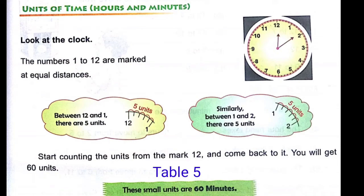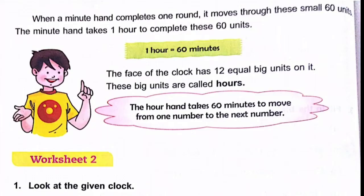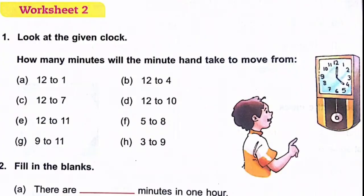One hour is equal to 60 minutes — everyone knows that. Now look at the given clock and read the positions. From 12 to 1, the minute hand covers 5 minutes. All these time-related question answers are correct.